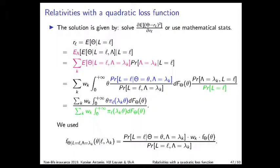Two extra steps finalize the derivation: in green, we re-express the distribution of L using the expression derived on sheet 45; in blue, we use the steady state distribution of the BM scale. We can apply the steady state distribution here because we condition on both theta and lambda, fully identifying our policyholder. Ultimately, this yields an expression for the relativities RL in a given BM scale.